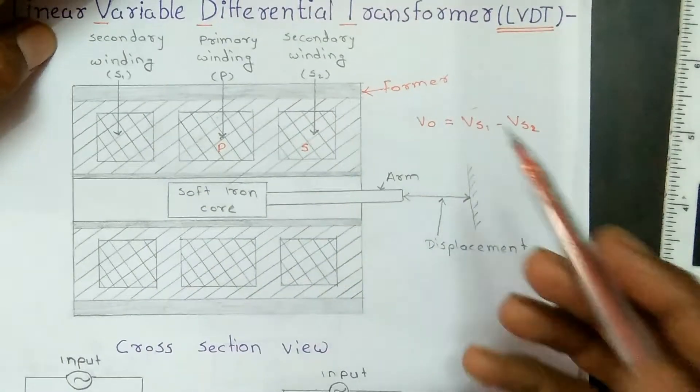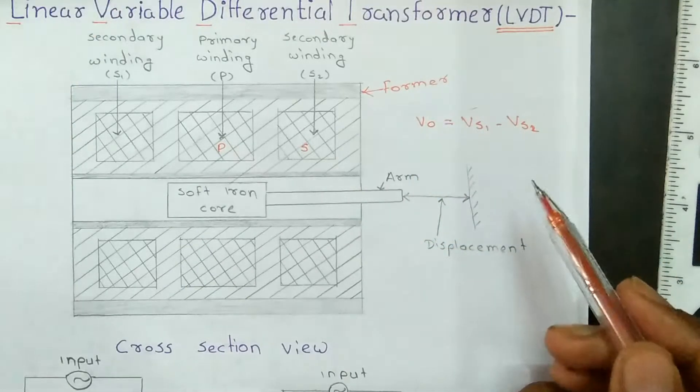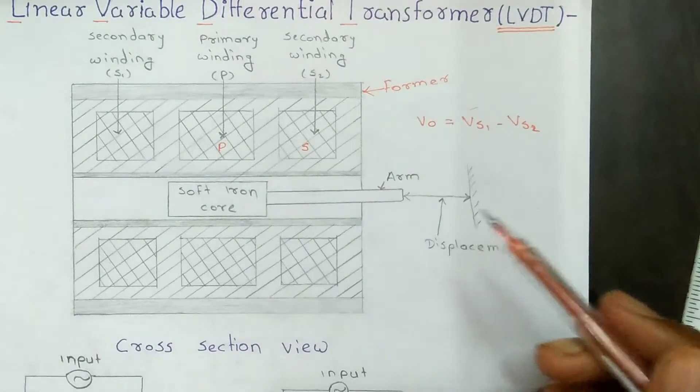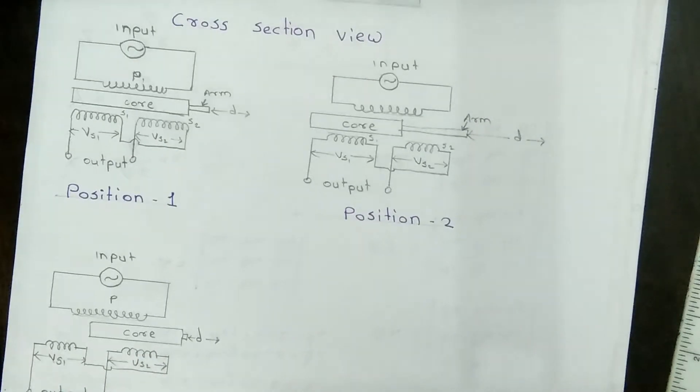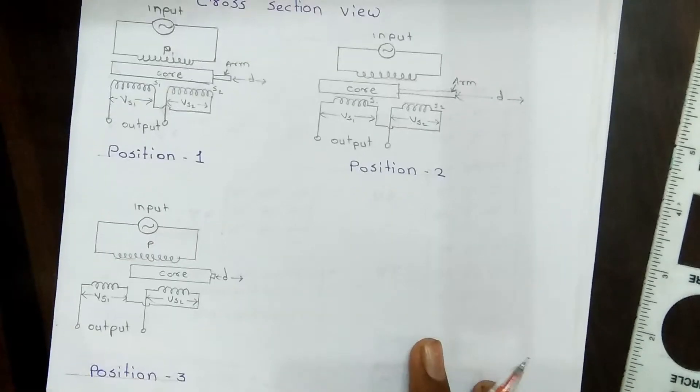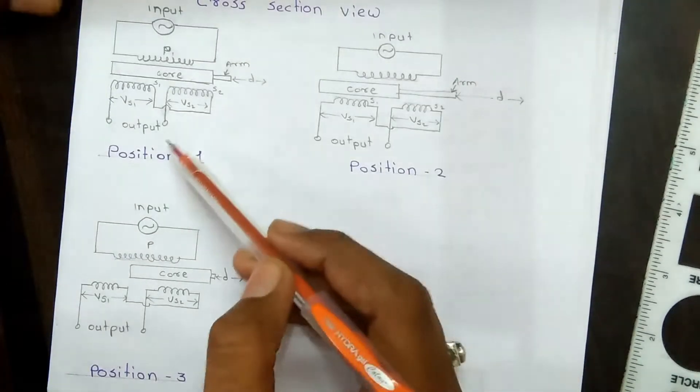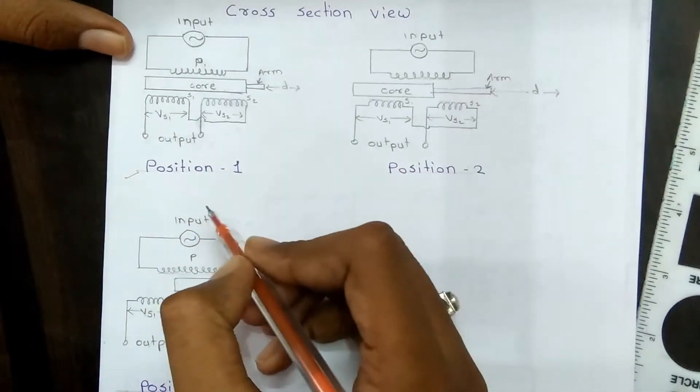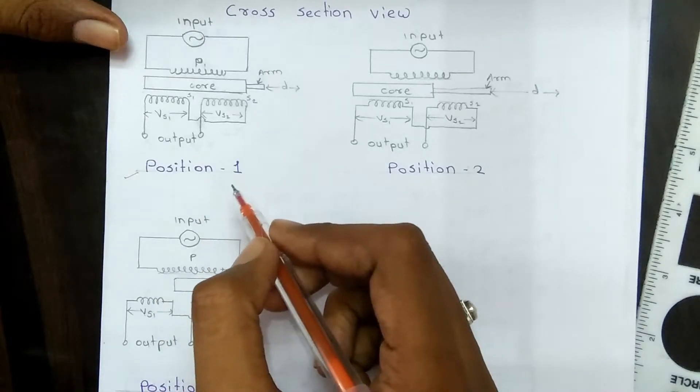Now we start working of LVDT. This is the working diagram of LVDT. Position 1: when there is no displacement attached with the core, the core is at a normal or null position. The flux linking with both secondary windings are equal.